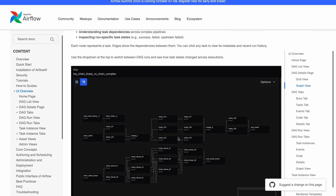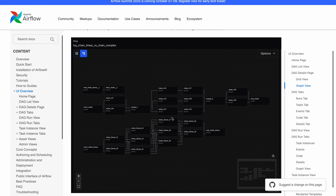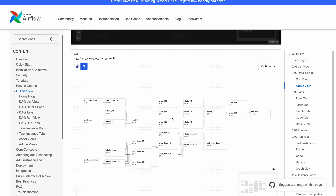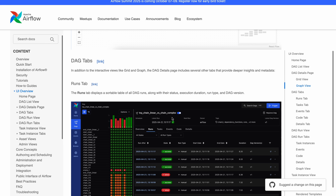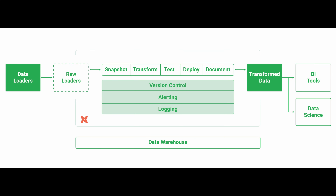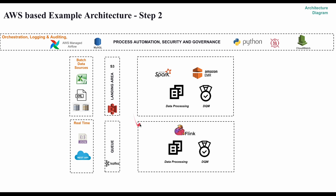Once you know batch and real-time processing, focus on orchestration and transformation. For orchestration, learn Airflow — specifically DAGs, sensors, automated dependencies, debugging, and retries. For transformation, learn dbt, which is like a Swiss Army knife for SQL transformations. It includes version control, models, and automated tests. You can wrap Spark and SQL transformations within dbt with minimal coding and then execute everything using Airflow.